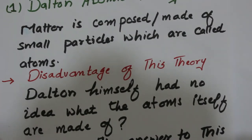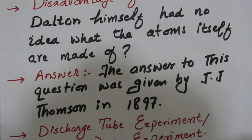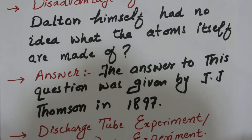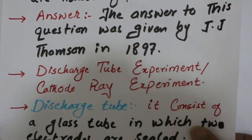The answer to this question was given by J.J. Thomson in 1897 when he discovered the electron through the discharge tube experiment. For now we are going to discuss the discharge tube experiment, also called the cathode ray experiment, and we will discuss J.J. Thomson's discovery of the electron later at the end of this class.